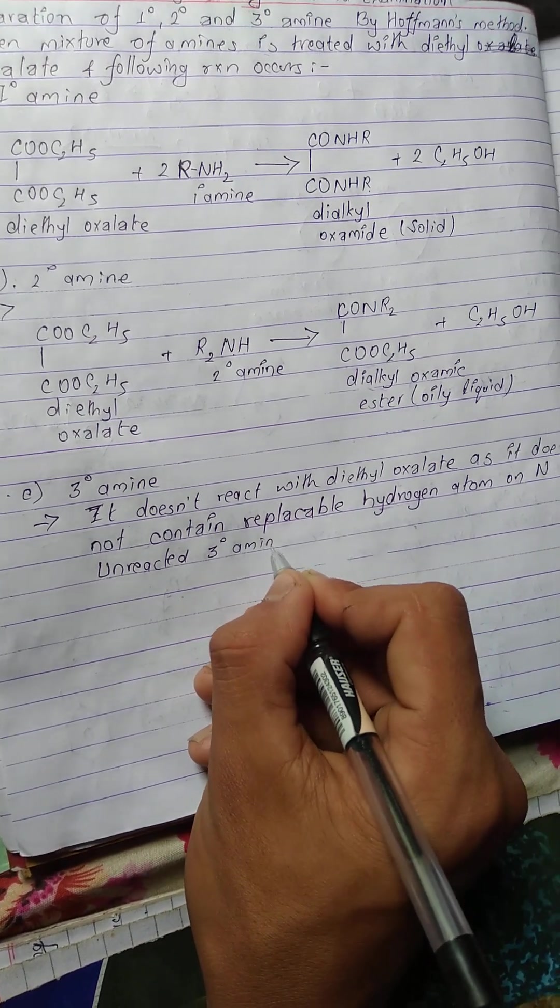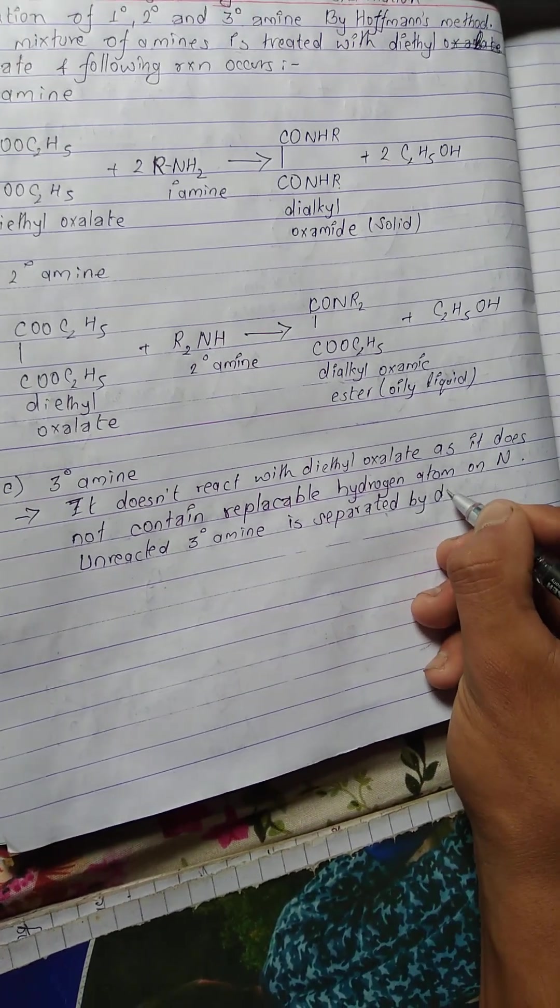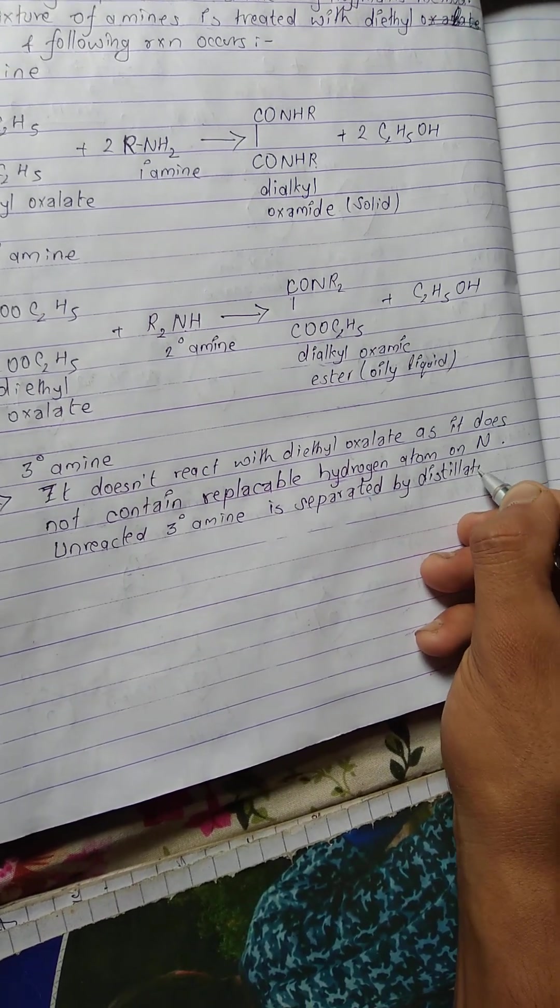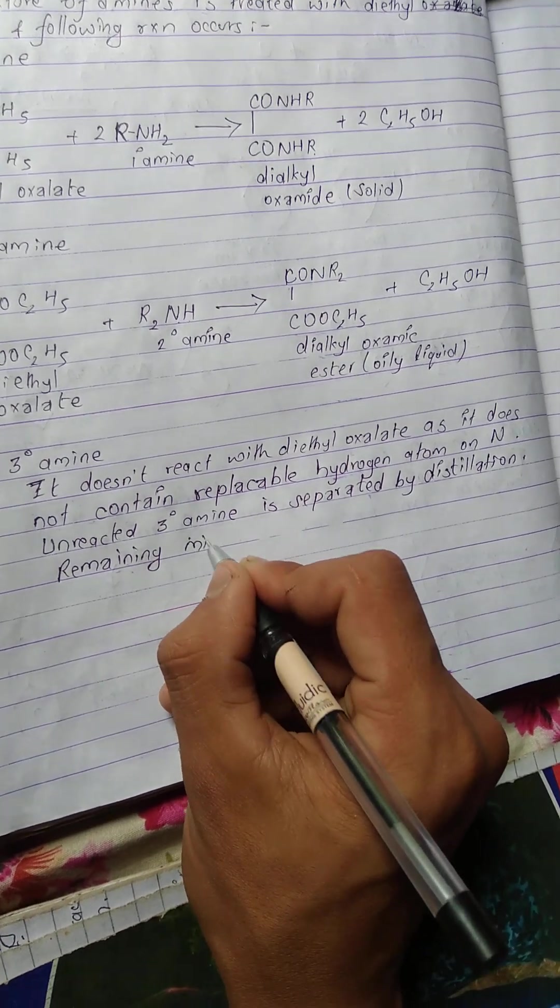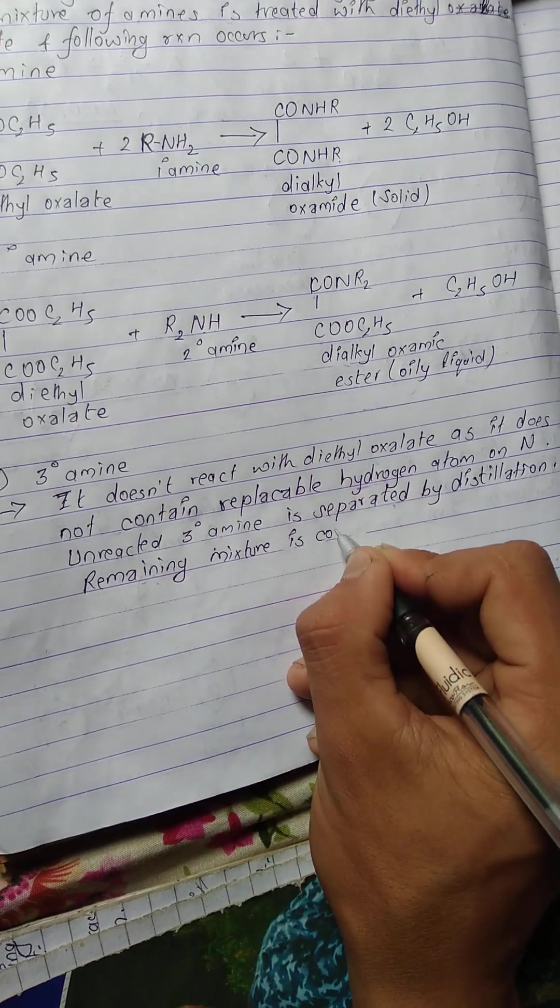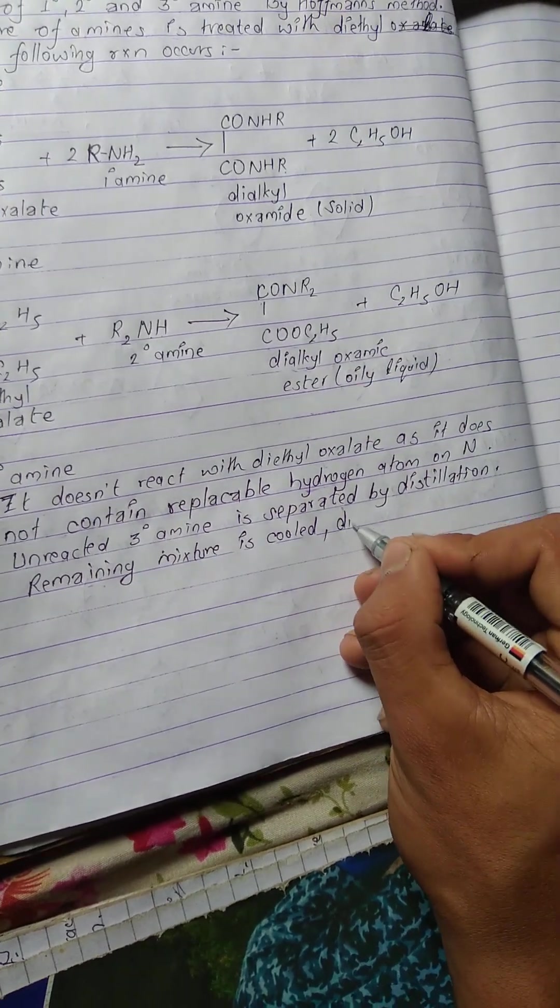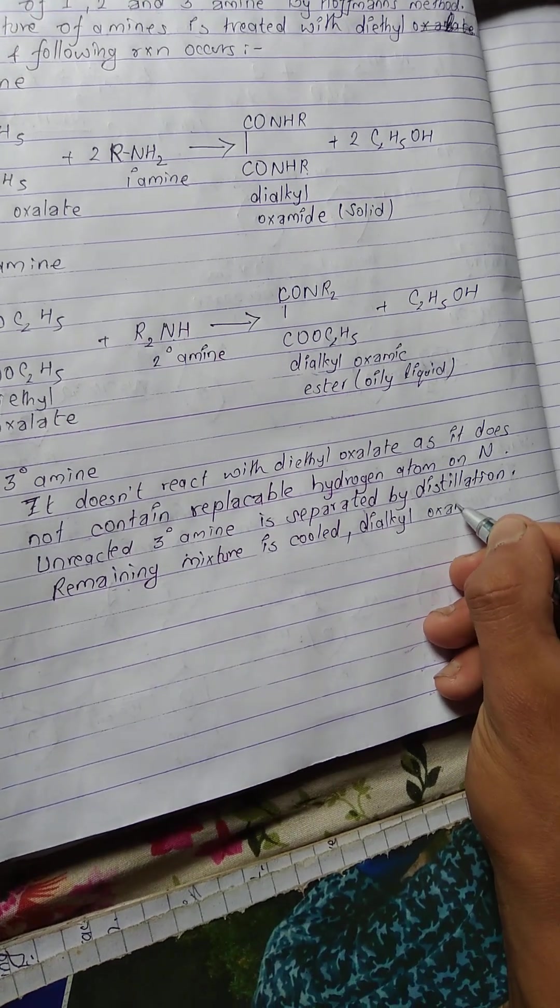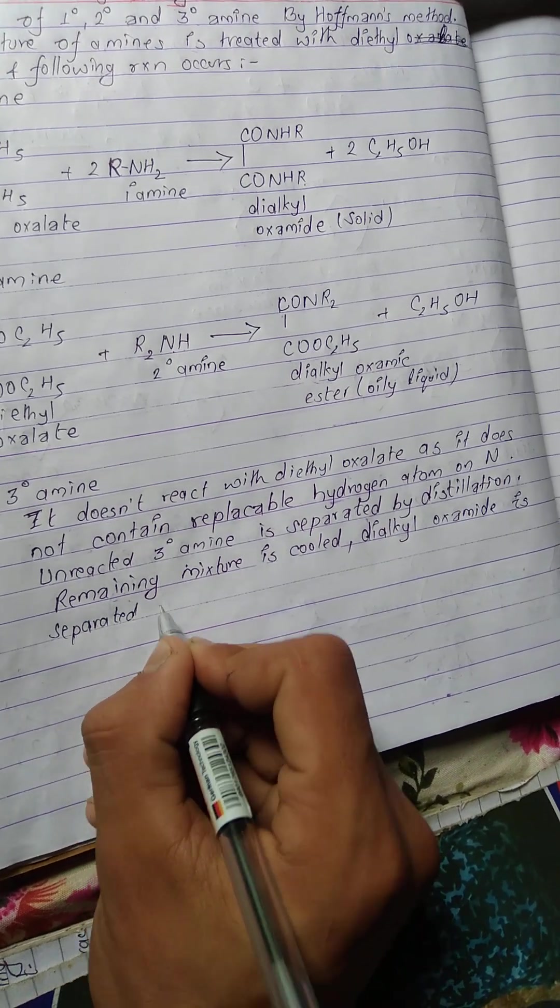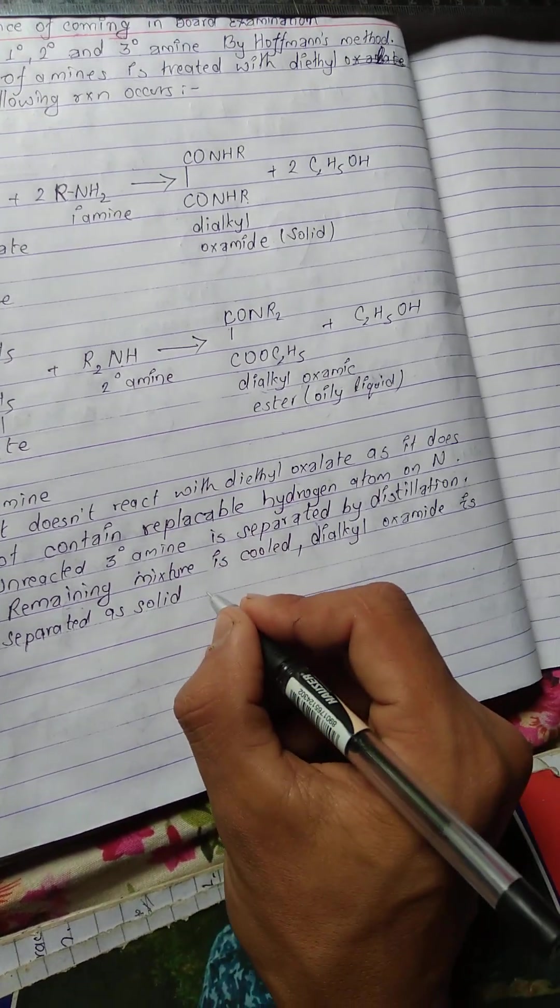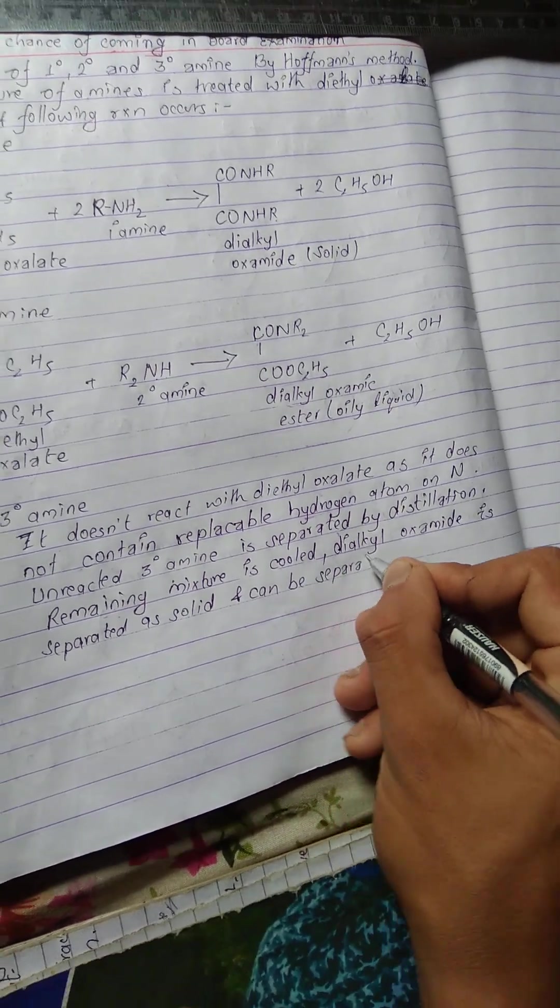Separation: the remaining mixture of one degree and two degree is cooled. The dialkyl oxalate solids are formed. The separation of dialkyl oxalates is done. They are separated as solid and can be separated by filtration.